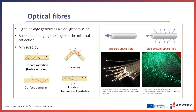In standard optical fibers, total internal reflection is achieved by means of a change in the refractive index of the core and cladding materials. This reflects the light back into the core whenever it tries to escape, so light can only be observed at the other end of the fiber. However, a change in the internal reflection angle can lead to light leakage through the fibers, generating side light emission. The main methods to generate side light emission include adding dopant agents (bulk scattering), bending, surface perforation or damaging the cladding, and adding luminescent particles.